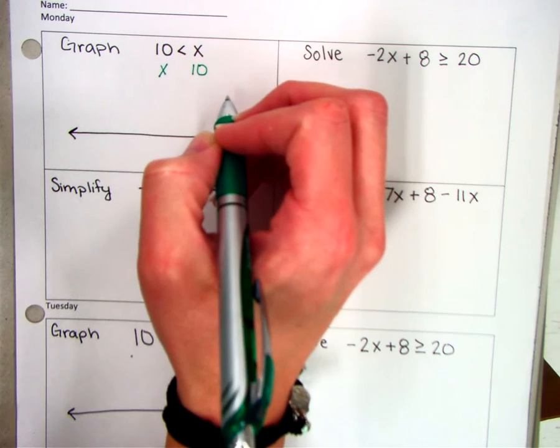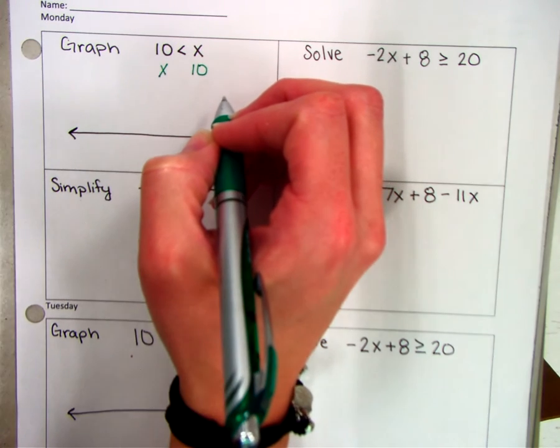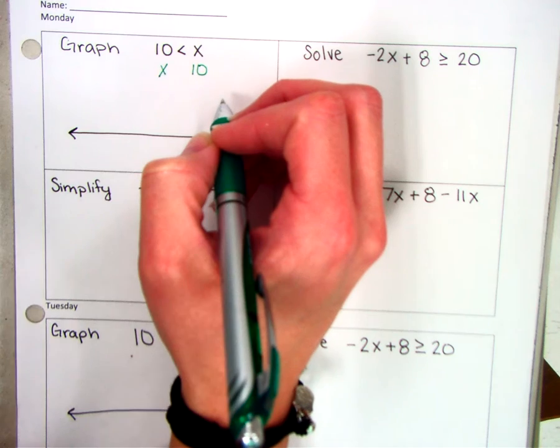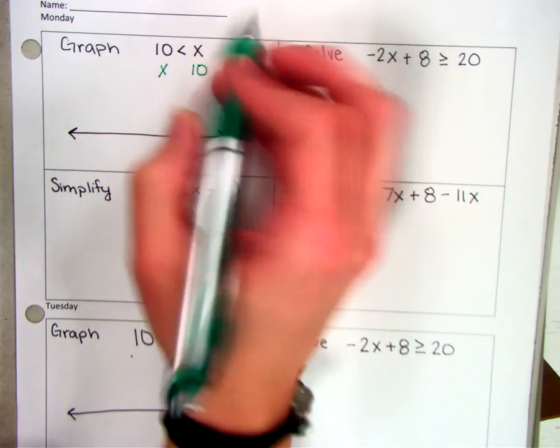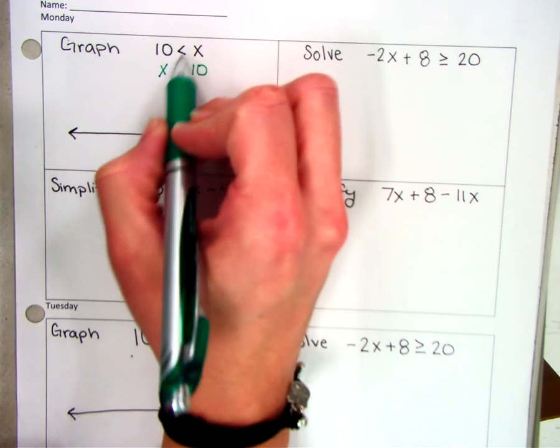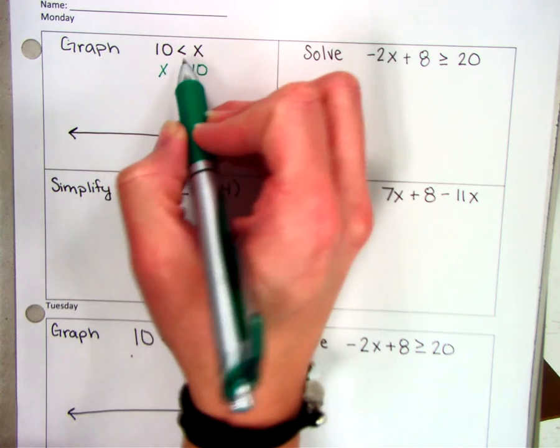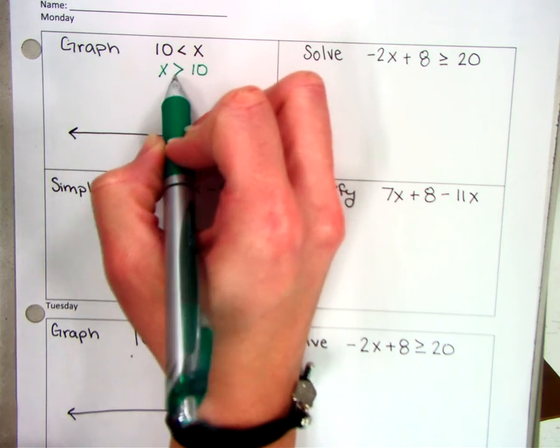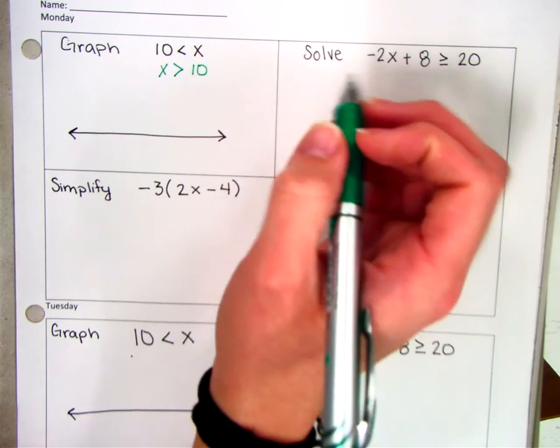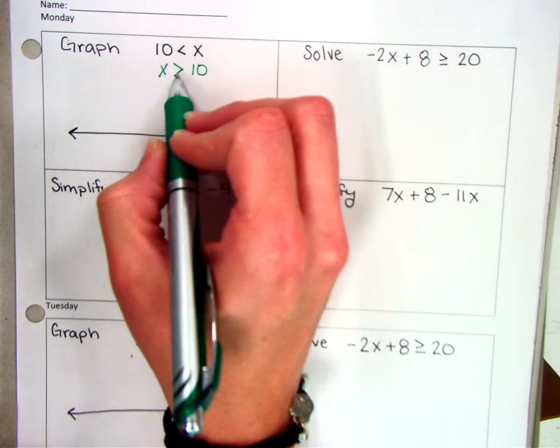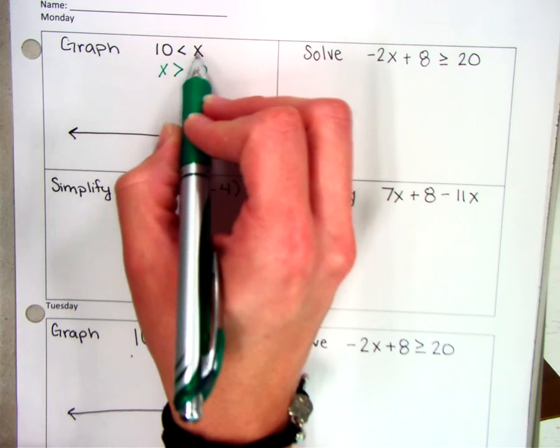And some of you might say, I knew that. Well, I thought you knew it too until I graded it, so make sure you pay attention. So when you flip the x and the 10, you have to flip the symbol as well. Okay, so the symbol is still opening to the x where it was opening to the x up here.